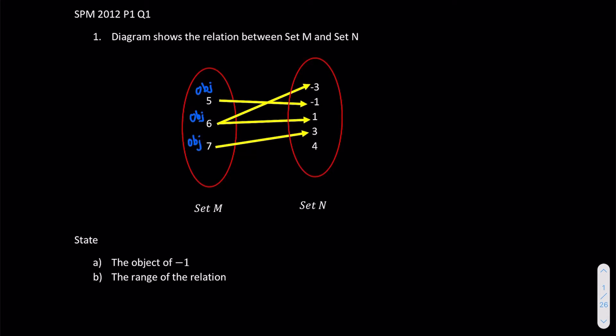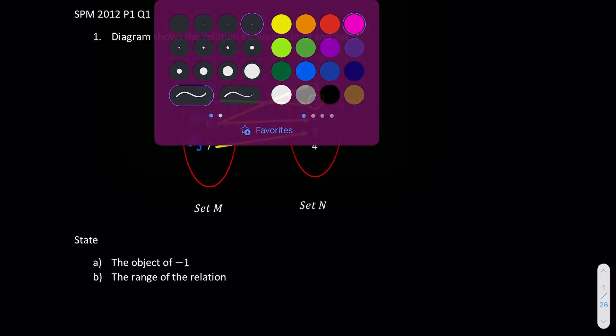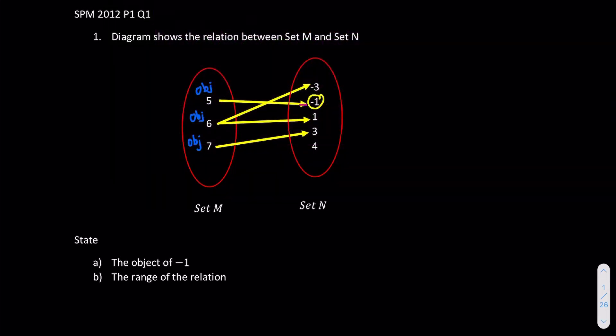Since they are looking for the object of negative 1, so we are looking at negative 1 now. So this is negative 1. So if you want to see the way to the link, we see that what is the numbers that are holding the negative 1, and we found it's eventually 5. So 5 will be our object.